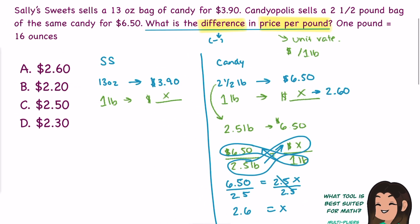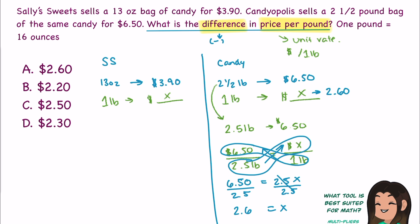I can move over to my other side for Sally's Sweets and do the same type of calculation. I know that I want price per pound, so I want my price on top. $3.90 over 13 ounces, equaling some amount of money over one pound. But something doesn't look right. Notice how when I did Candyopolis, I had pounds compared to pounds. My units were the same, so the ratio was going to be in proportion. Take a look at Sally's Sweets. I have ounces to pounds. Those are not the same units.